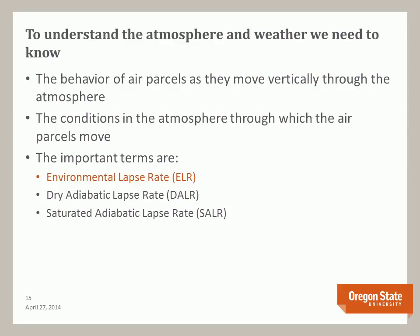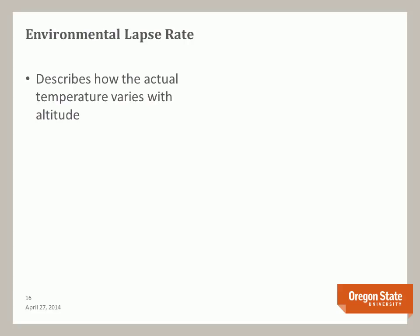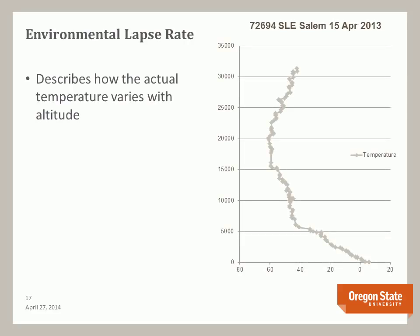Let's first start with the environmental lapse rate. The environmental lapse rate describes how the temperature varies. Here is a graph of the environmental lapse rate from Salem, Oregon on April 15, 2013. There are three sections to this graph. The first section is a relatively constant slope — the value of this slope is called the environmental lapse rate. The slope changes at the tropopause, the boundary between the troposphere and the stratosphere.